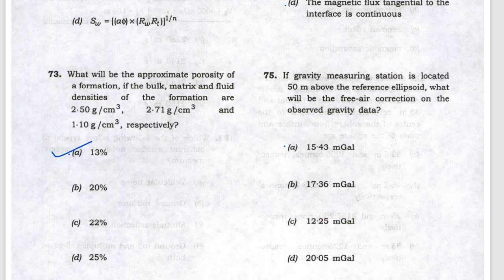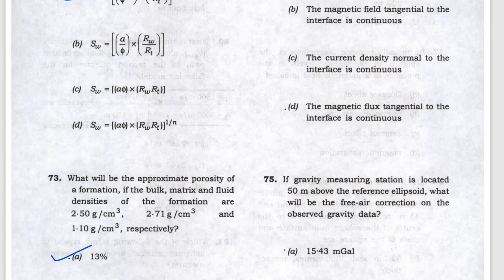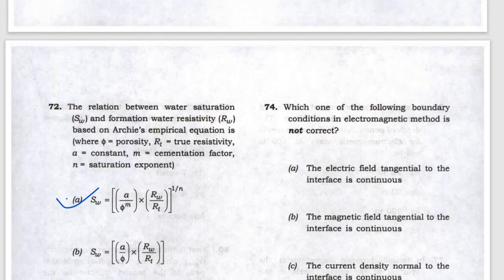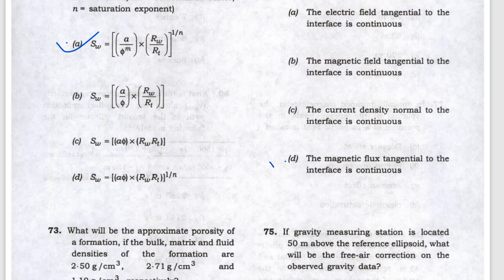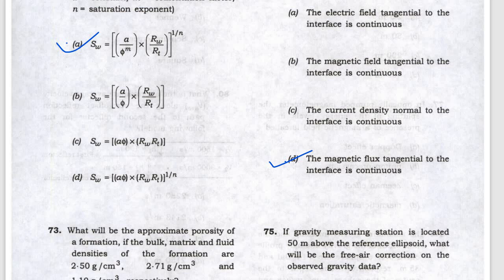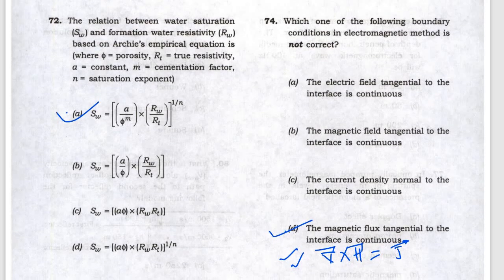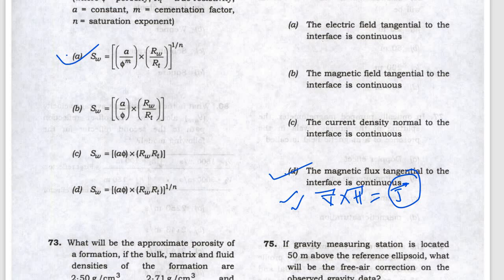The porosity answer is A. Question 74 is about electromagnetic boundary conditions. Magnetic flux is tangential, so curl of H equals J. The answer is the tangential component of H. If there is current, we use curl of H, not curl of B, so you have to take the general condition that there is current.